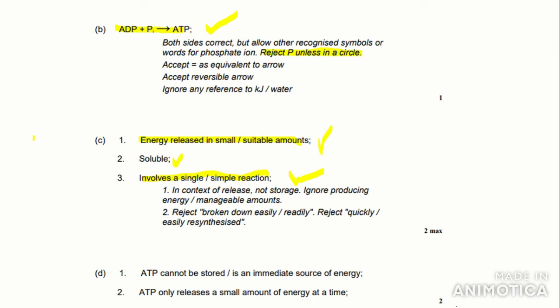It says in context of release, not storage, so you can't put anything about ATP storage. Ignore 'producing energy in such manageable amounts,' so you don't get a mark if you put that. It says reject 'broken down easily/readily' and reject 'quickly/easily resynthesized' — so if you put either of those you don't get any marks at all for this question. They normally reject these because they don't really provide a reference to biological processes — they are only relevant to the cell as a whole. It's a bit confusing but you'll get the hang of it.